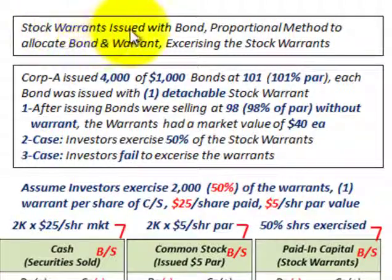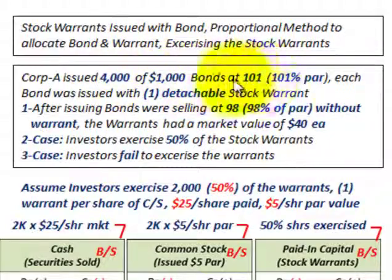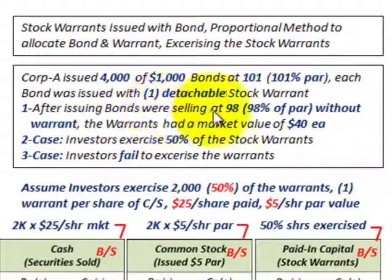We're going to be going over stock warrants issued with bonds, using the proportional method to allocate these bonds and warrants. Corporation A issued 4,000 bonds at $1,000 par value at 101% of par, and each bond was issued with one detachable stock warrant. After issuing the bonds, they're going to be selling separately at 98% of par without the warrant, and the warrants had a market value of $40 each.